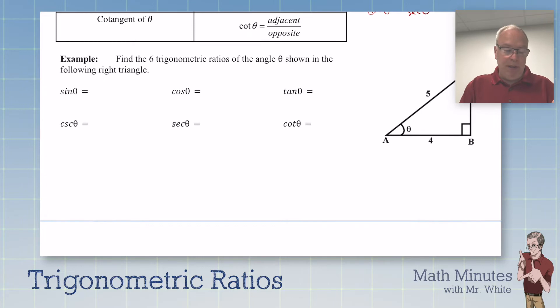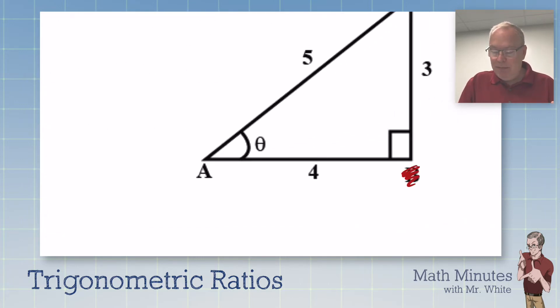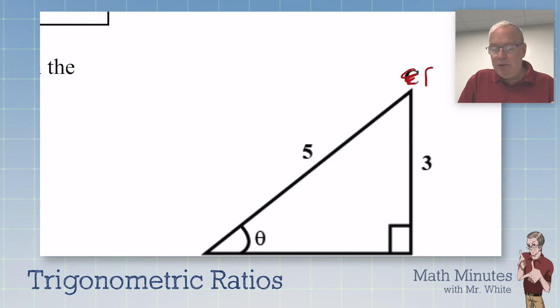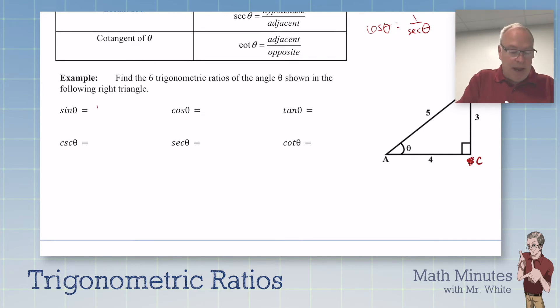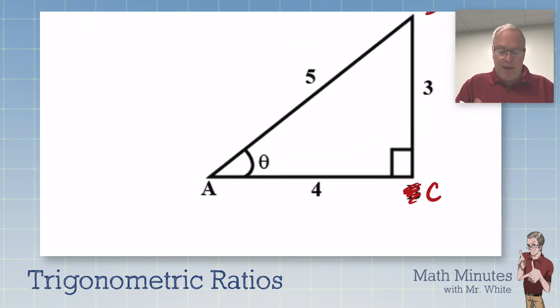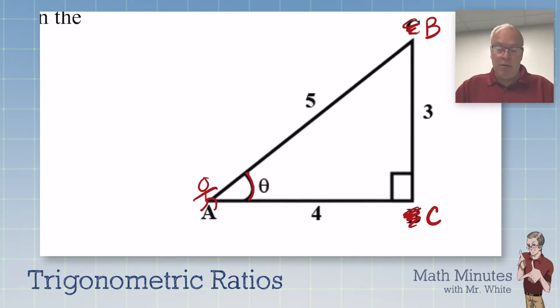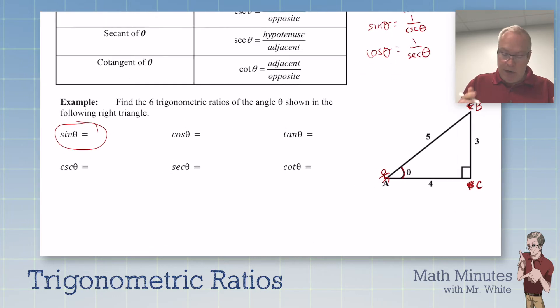So here we have a simple example. The sine of theta - you have to find theta. Theta is right here, and you have to imagine yourself sitting down there at that angle. Sine is opposite over hypotenuse. Look up in your notes there. Sine is opposite over hypotenuse. So here's my angle. The side opposite would be 3, and then the hypotenuse is 5. So we're going to fill in 3 fifths for sine.